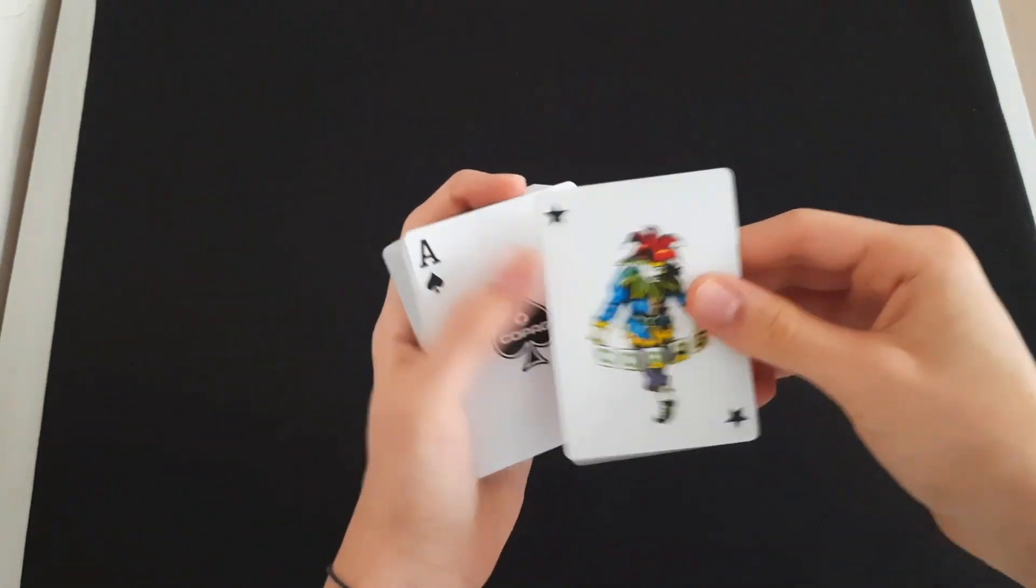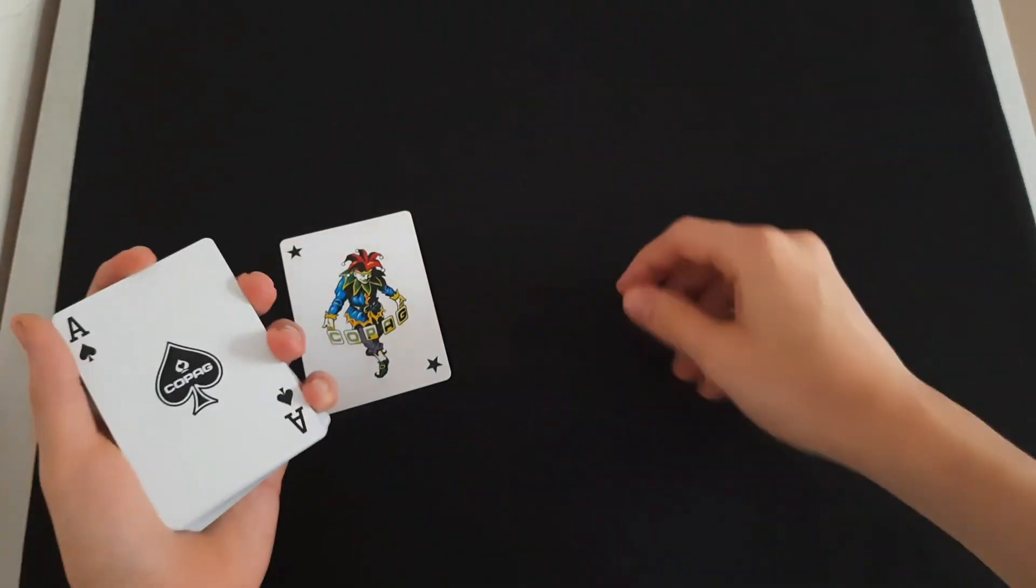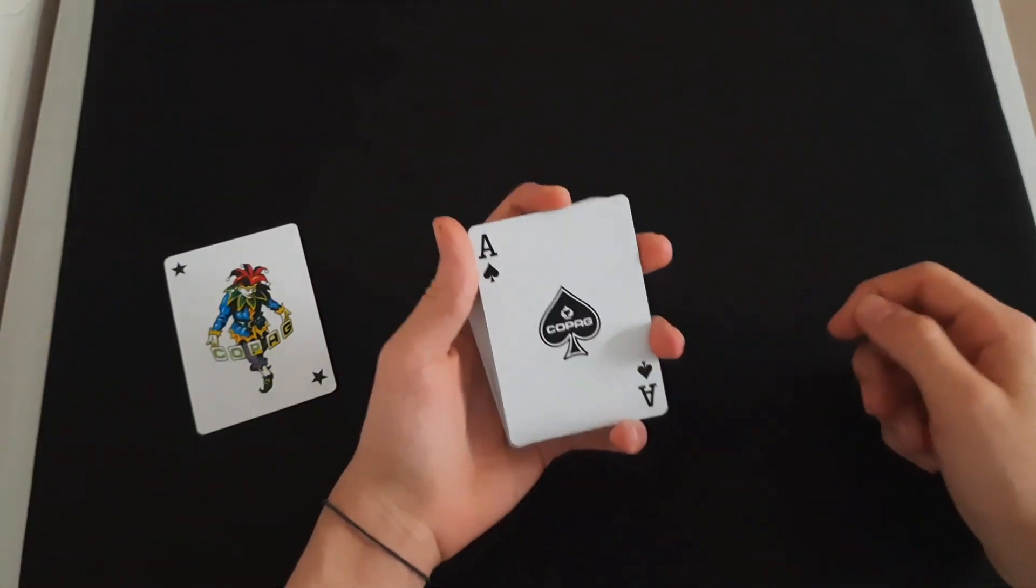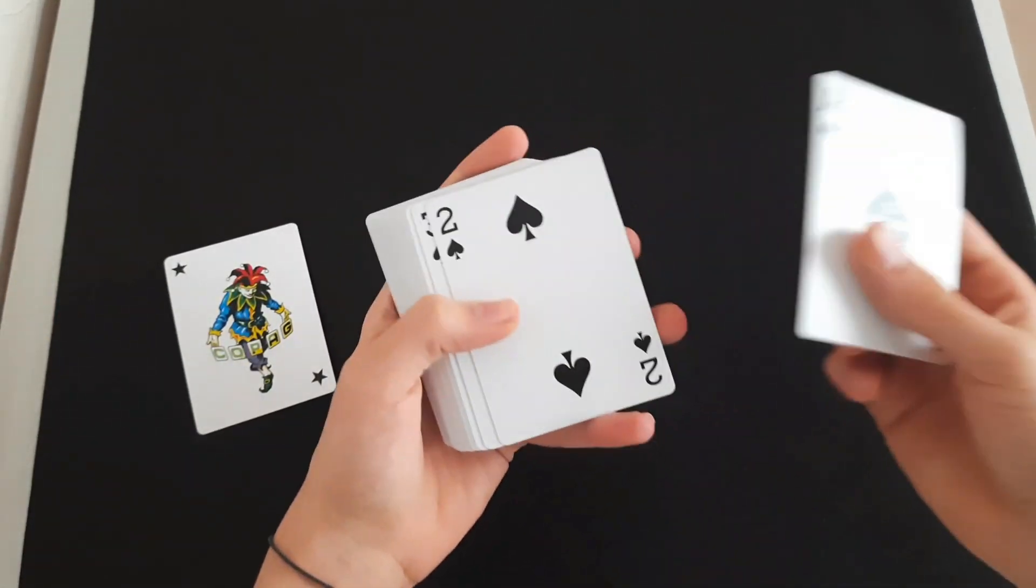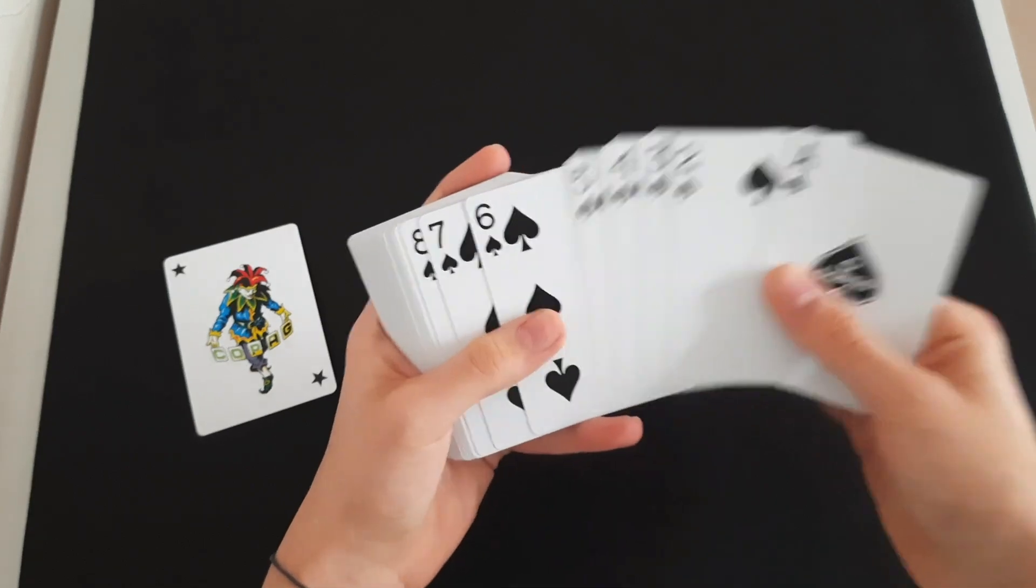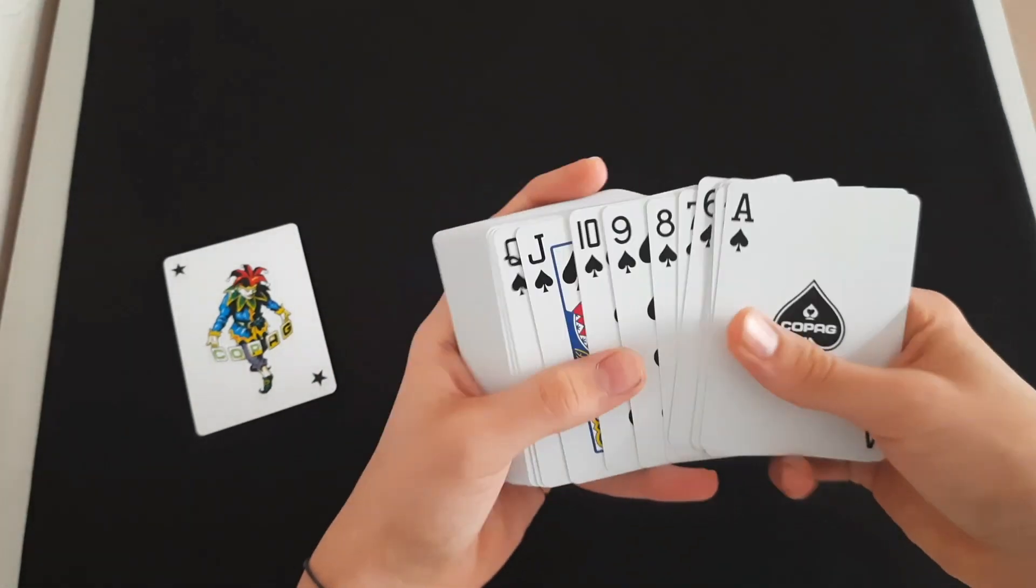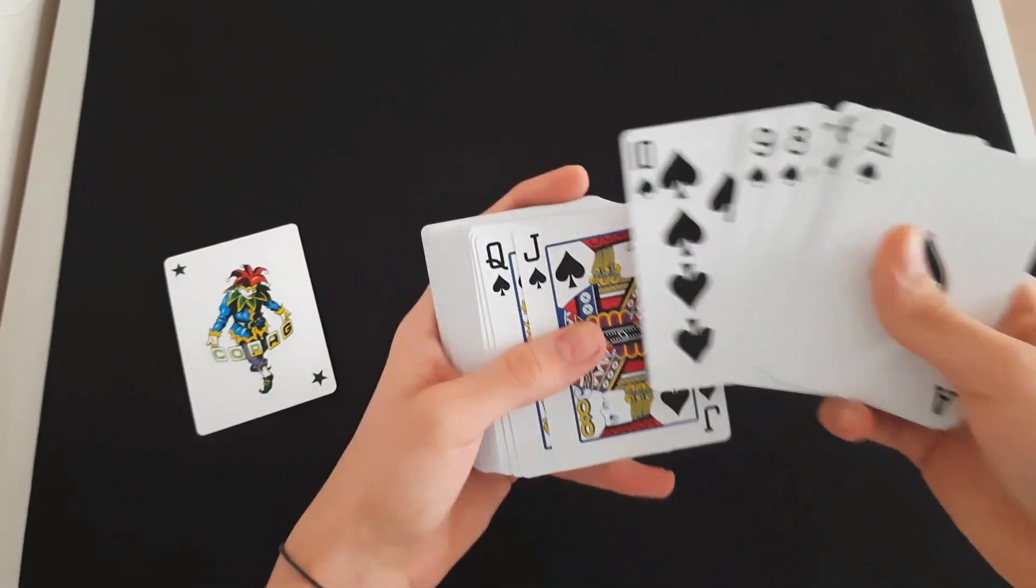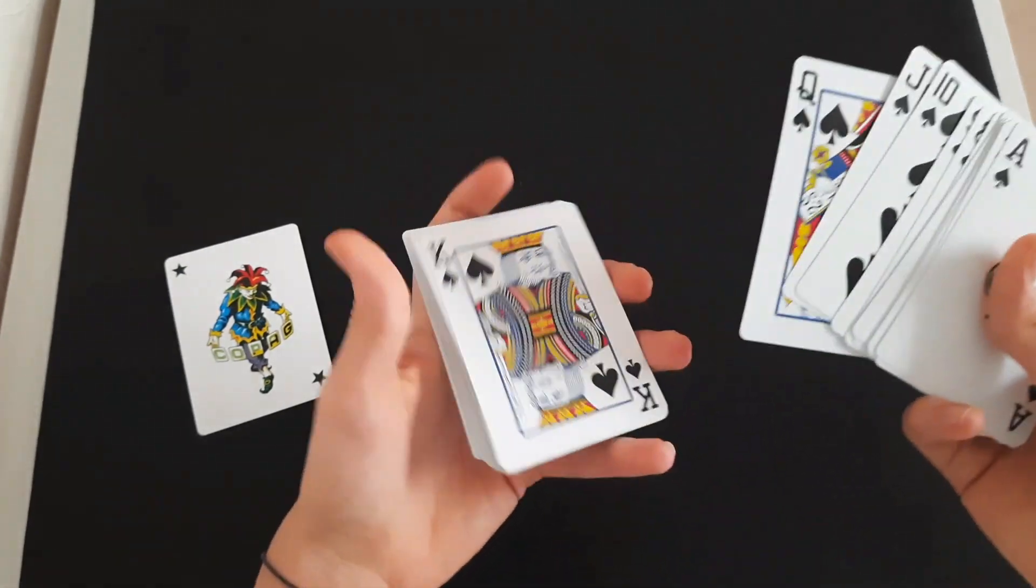First we have a joker, here we have the ace of spades, and here are all the pips. The pips are a little bit different than normal USPCC cards and I quite like it. The court cards are different as well.